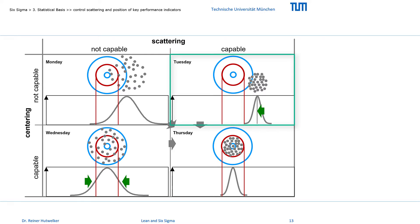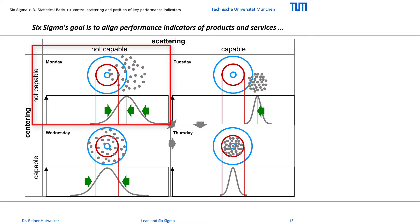So if we could choose a day, we would choose Tuesday. But we cannot do that in practice. Typically we will have to deal with position shifts and scattering. And this is the challenging task in a Six Sigma project. Centering the position and reducing the scatter. Nothing more, but nothing less.